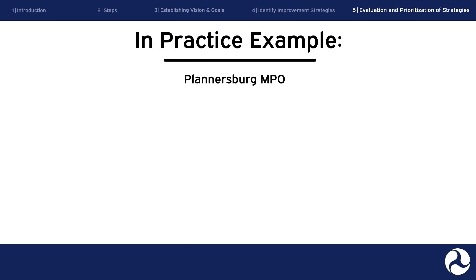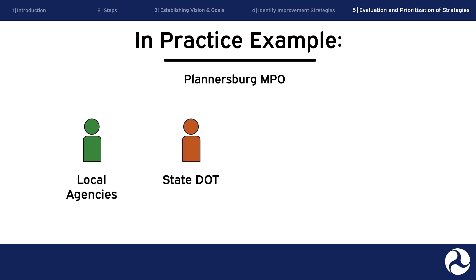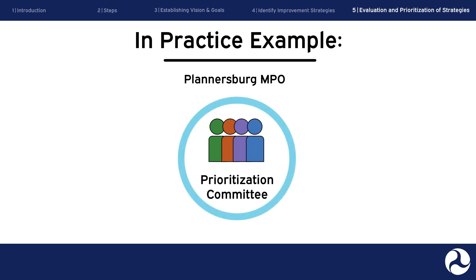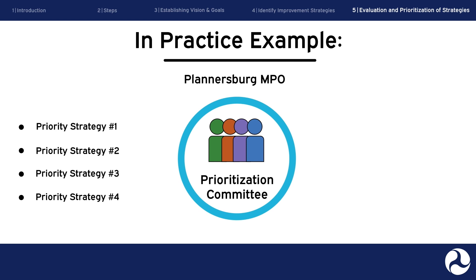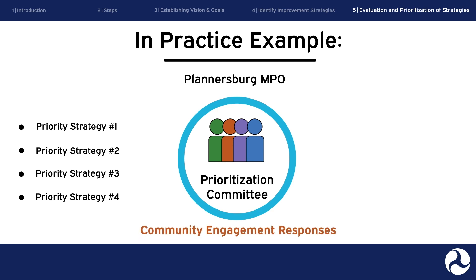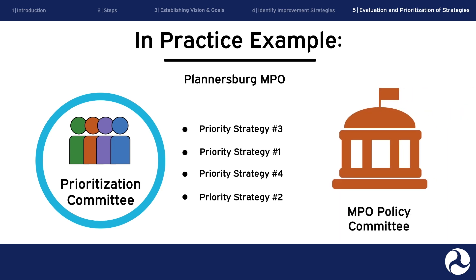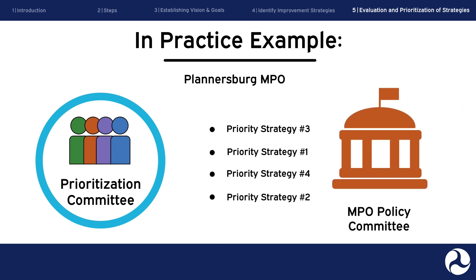In practice example: staff for the Plannersburg MPO convene a committee of representatives from local agencies, the state DOT, and environmental and economic development organizations to prioritize the strategies that they previously developed through the planning process. The committee applies the evaluation criteria that were developed in advance and aligned with the goals of the MTP. They evaluate benefits, trade-offs, costs, liabilities, project readiness, and community engagement responses, including outreach to marginalized communities. They then rank strategies to align with available resources. These recommendations are presented to the MPO policy committee that will ultimately decide what strategies to include in the plan.